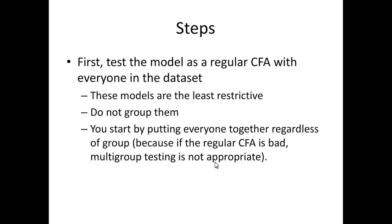We're going to walk through the steps one at a time — there are four official steps and two sort of unofficial ones. First, you have to test the model as a regular CFA. Every group is thrown into the data set and that model is the least restrictive. The idea behind multi-group analysis is that you start least restrictive and slowly add more and more constraints until you've said these are exactly the same — going from loosey-goosey to fully restricted, bringing them together and saying they've got to be the same.